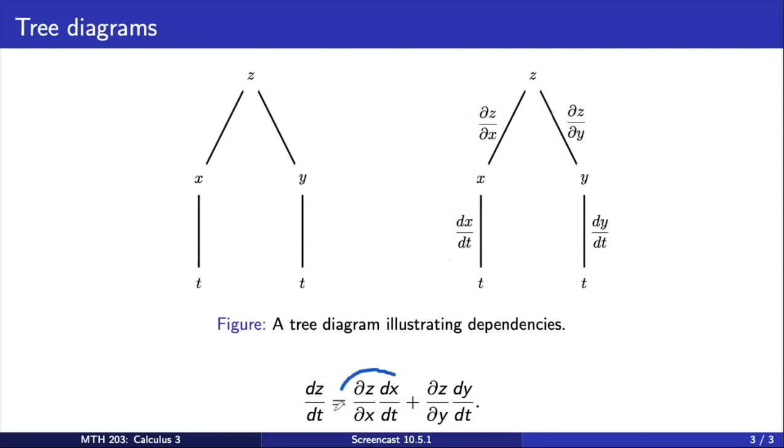This gives us this term of the chain rule as the product of all the derivatives that we passed along that trace.